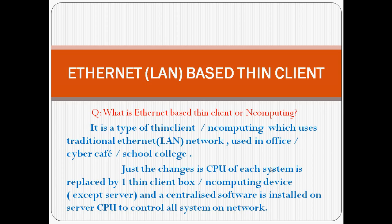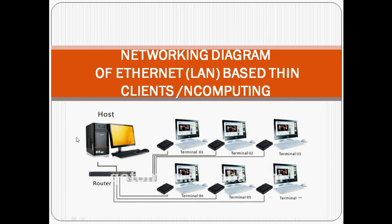Let's see in detail. This is the network diagram: this CPU will be replaced by this thin client. Only one CPU is required, on which the centralized software will be installed. The Ethernet port connects to the router, switch, or hub, and one port supplies that device while the rest of the ports are given to the other thin clients. Each thin client has an option to connect your monitor, keyboard, and mouse. From one single computer you can use many more systems.